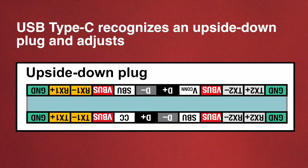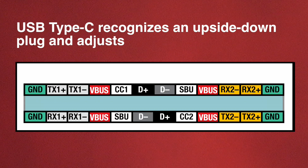A different approach is taken for USB 3.1, which can achieve up to 10 Mbps, and for video at above 5 Mbps. Here the pins match up again in a simple pattern. If you insert the connector incorrectly, it's like you've twisted the cord and the solution is to untwist it. So you need a MUX if you're doing just USB 3, or a more complicated crosspoint switch if you're going to support video.